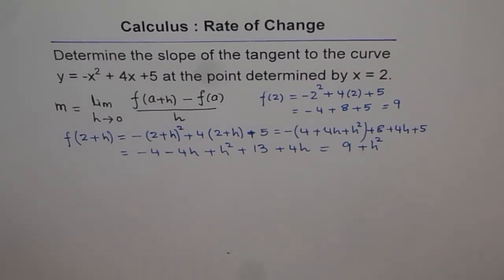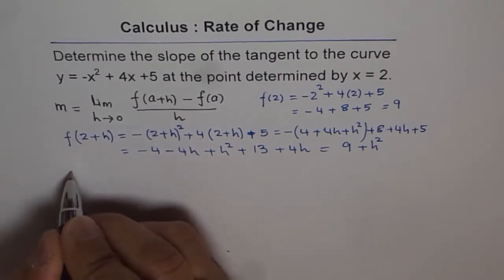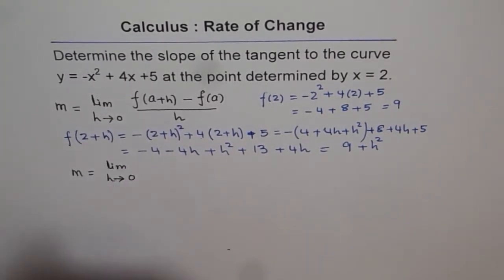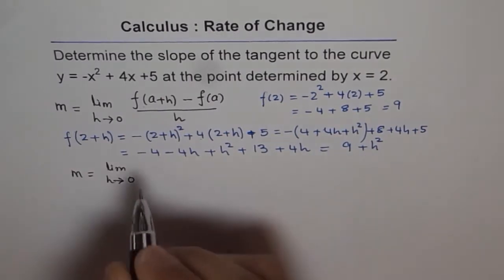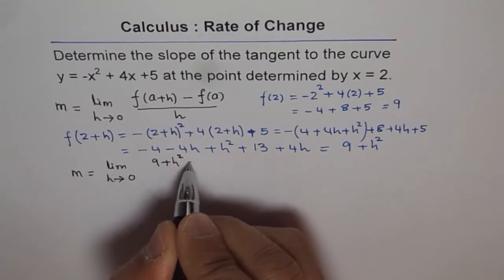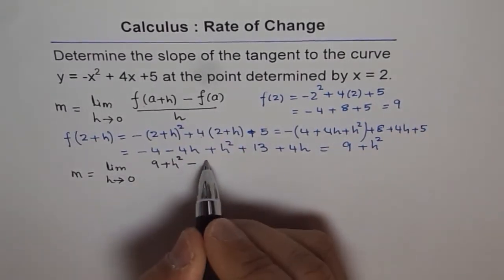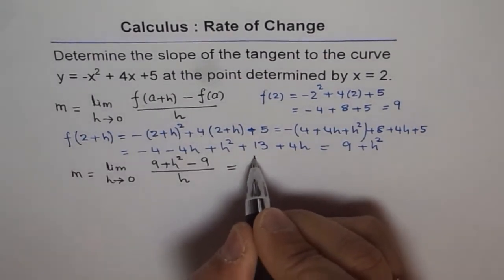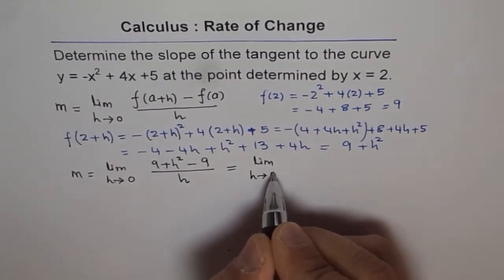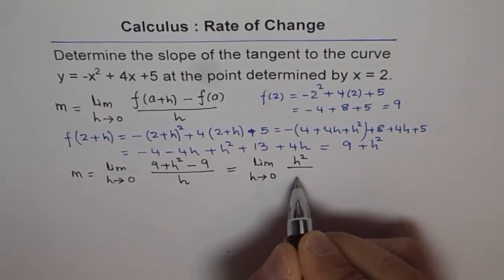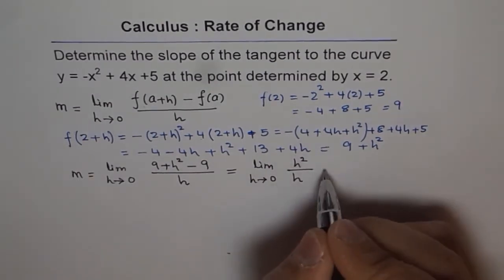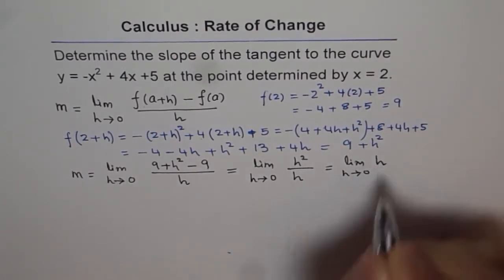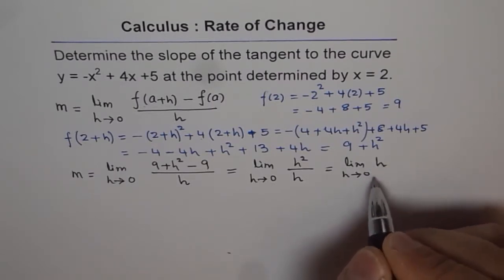Now we will find the slope using our difference quotient formula: m = lim(h→0) [f(a+h) - f(a)]/h = lim(h→0) [(9 + h²) - 9]/h. The 9's cancel out, so we get lim(h→0) h²/h = lim(h→0) h. Plugging in 0, we get 0.